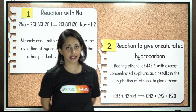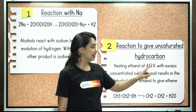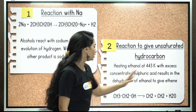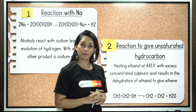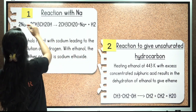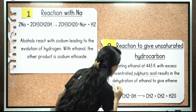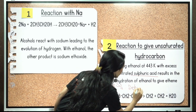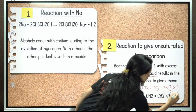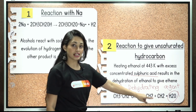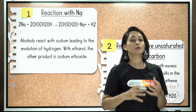Next, reaction to give an unsaturated hydrocarbon. Heating ethanol at 443 Kelvin with excess concentrated sulfuric acid (H2SO4) results in the dehydration of ethanol to give ethene. H2SO4 acts as a dehydrating agent — dehydrating means removal of water. In this reaction, a molecule of water is removed, and we get ethene, which is an unsaturated hydrocarbon.